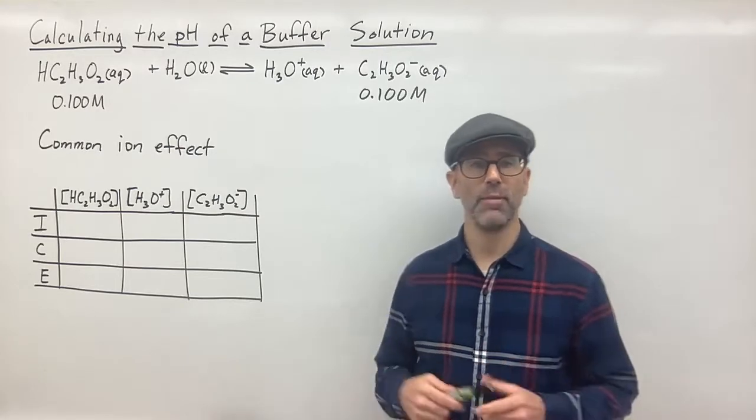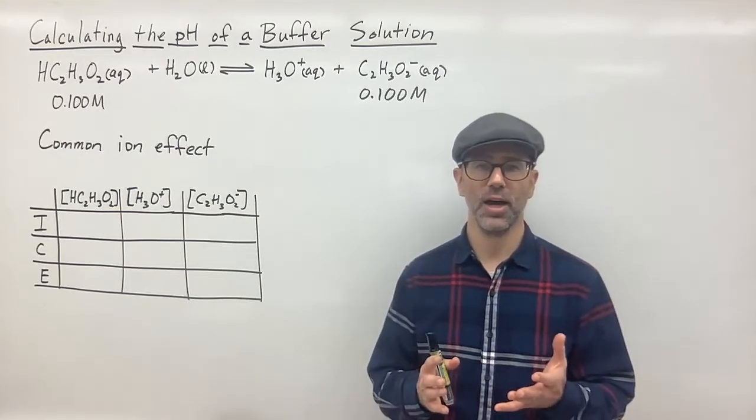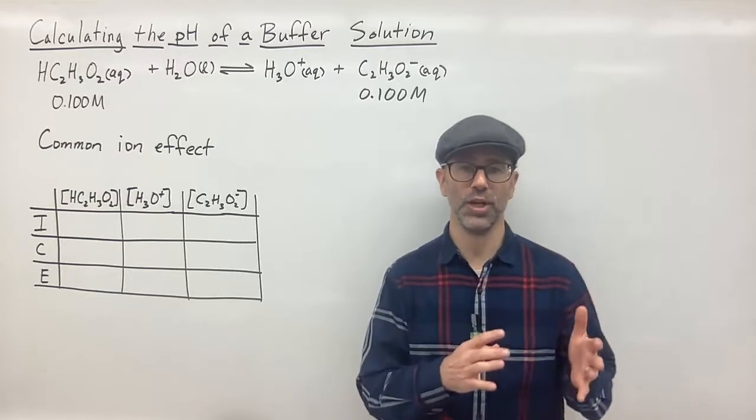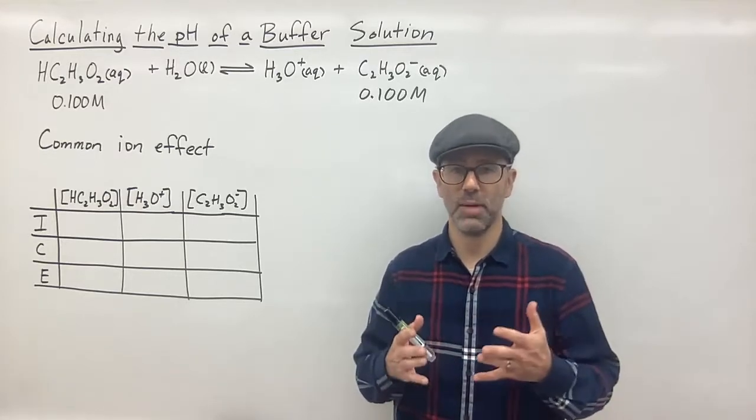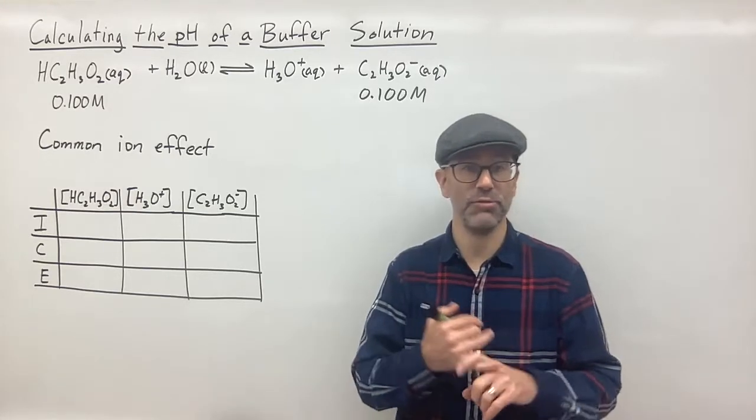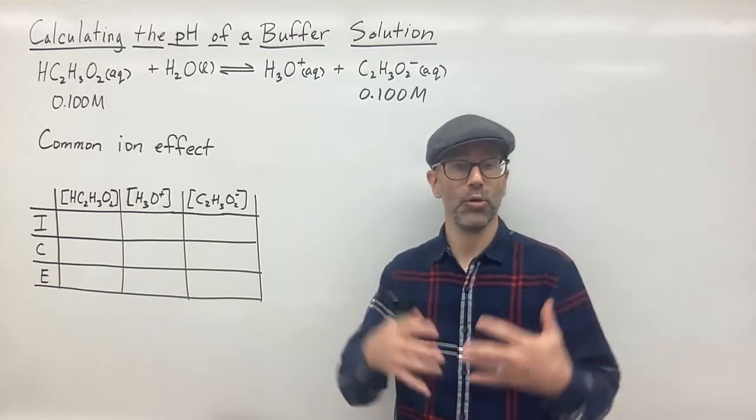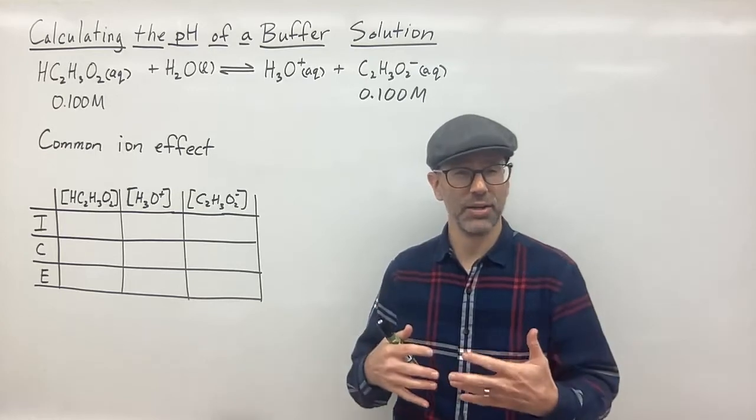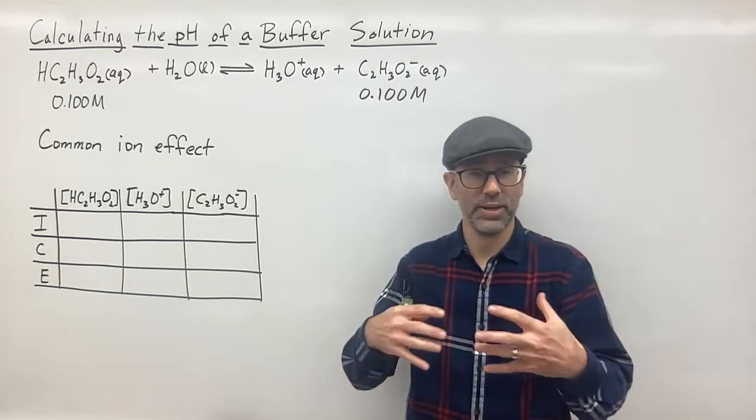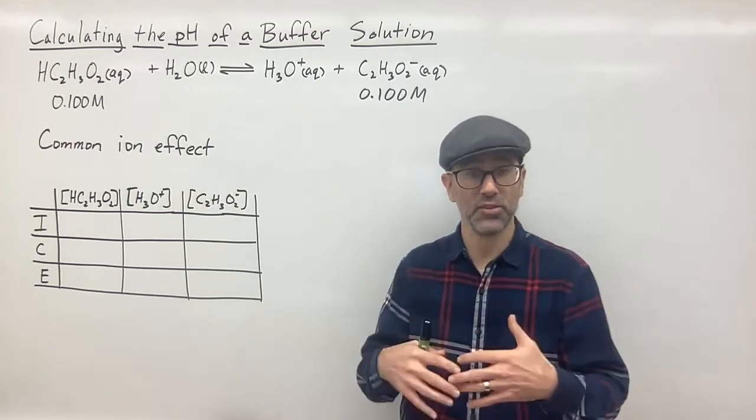So here we have a buffer and first I want to remind us that in other videos we've talked about how to calculate the pH of just an acid or pH of just a base. But here we got both mixed together. How do we calculate the pH of an acid with its conjugate base mixed together?